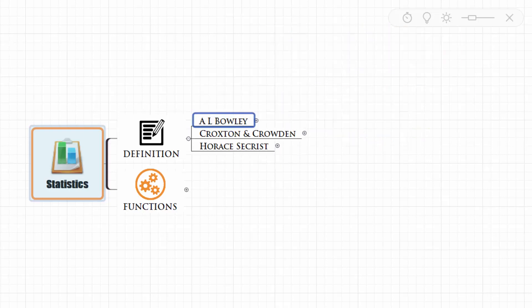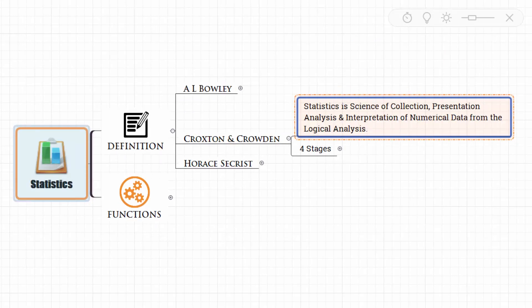So let's have a look at the definition given by Croxton and Crowden. The definition reads like this: statistics is a science of collection, presentation, analysis, and interpretation of numerical data from the logical analysis. This definition has four stages.